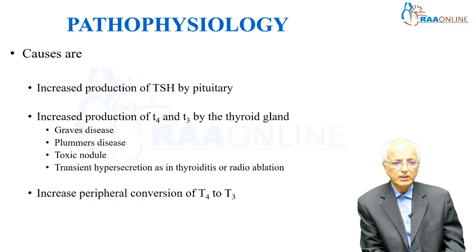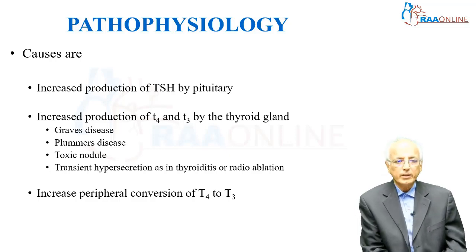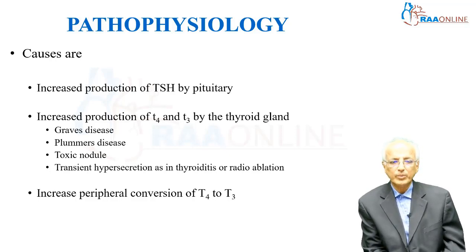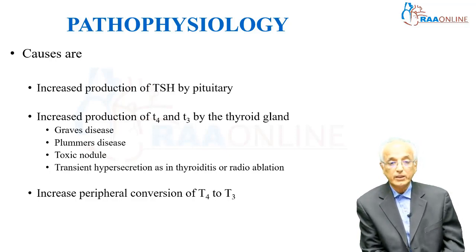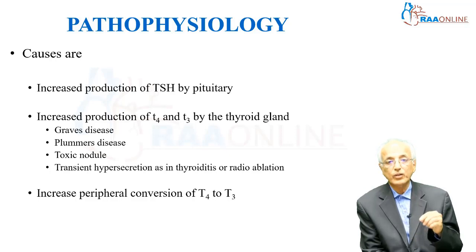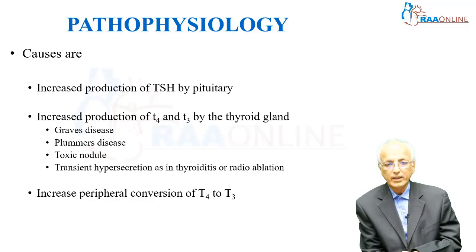Now coming to pathophysiology: thyroid hormone secretion depends on TSH and TSH-releasing hormone coming from the hypothalamus. Basically there is an increased production of T4 and T3 by the thyroid gland, as seen in Graves' disease, Plummer's disease, toxic nodule, or transient hypersecretion in thyroiditis or radioablation. A second issue is increased peripheral conversion from T4 to T3. You have to remember T4 is the storage form and T3 is the active form — so if there is any reason for increased conversion from T4 to T3, there will be a state of hyperthyroidism.